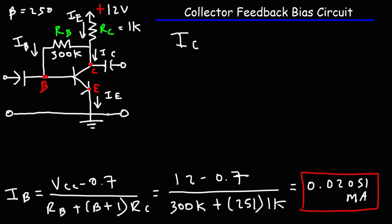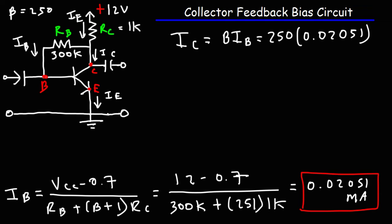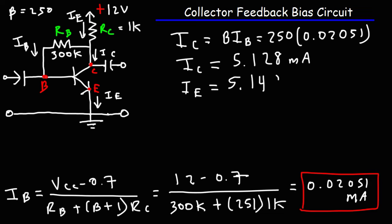Now that we know IB, we can calculate IC, which equals beta times IB. So 250 times 0.02051 milliamps gives a collector current of approximately 5.128 milliamps. For the emitter current, it's IC plus IB: 5.1275 plus 0.02051, giving an emitter current of 5.148 milliamps.